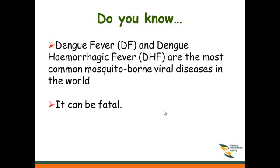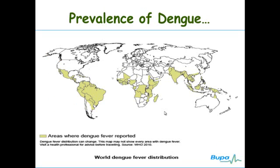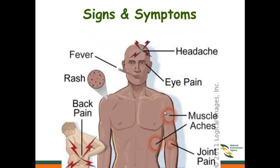Did you know that dengue fever (DF) and dengue hemorrhagic fever are the most common mosquito-borne viral diseases in the world? They can be fatal. This diagram, taken from the WHO 2010 world dengue fever distribution, shows the areas where dengue fever has been reported.